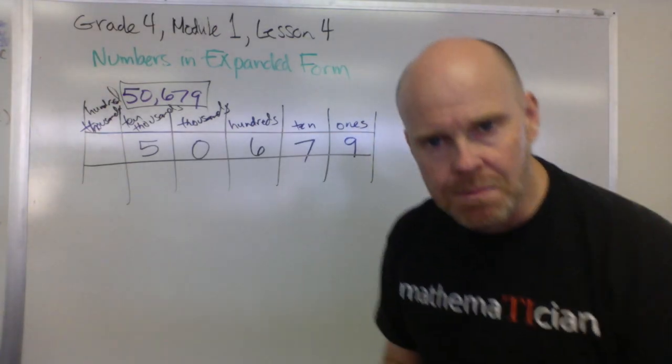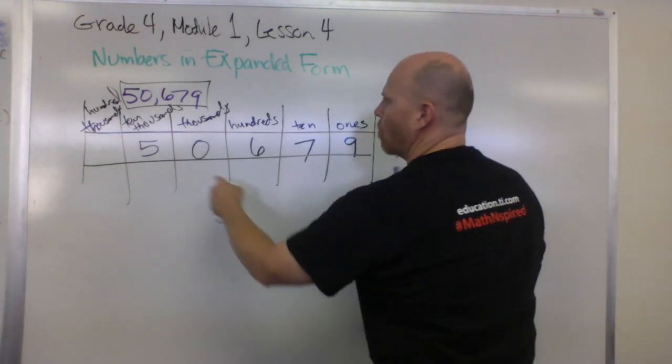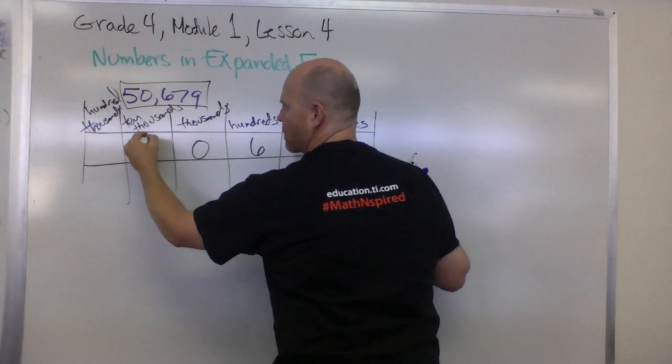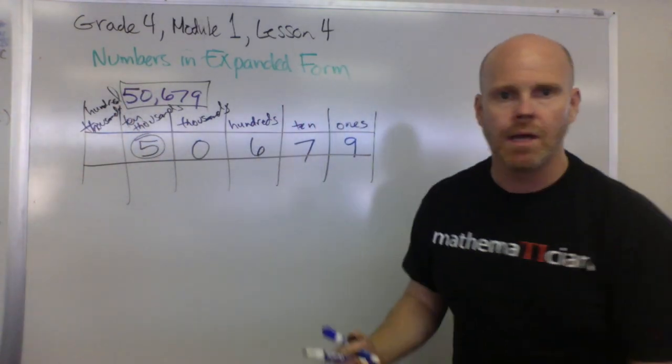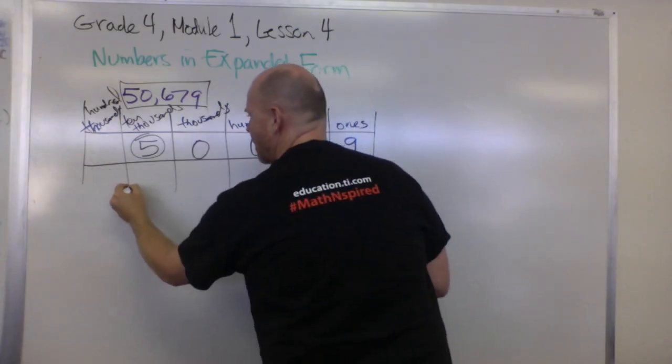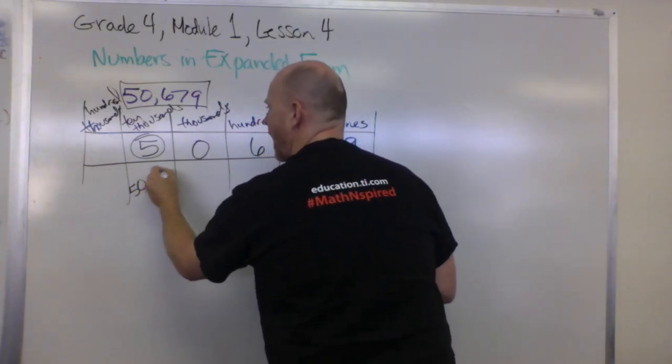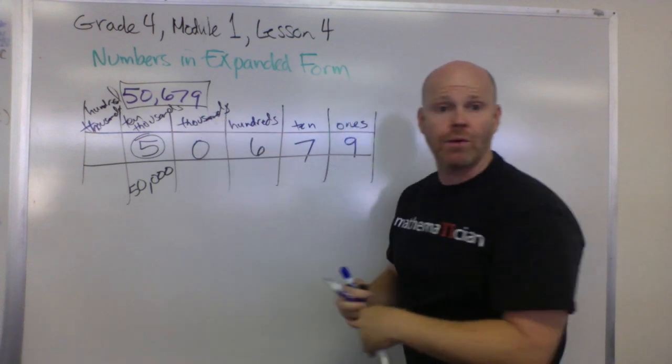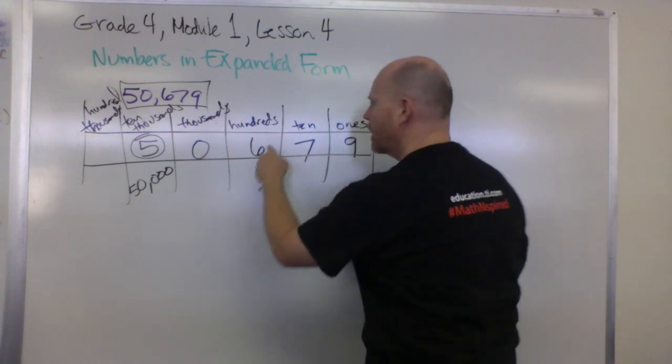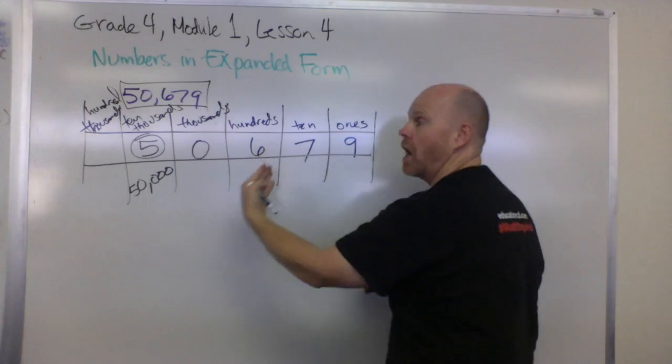What do we have? So what this means is we have, right here, five copies of the ten thousands. That means we have 50,000 right here. Here we have zero copies of the thousands, so we have nothing there. Here we have six copies of the hundreds, so that really means we have 600.